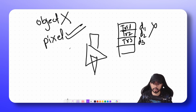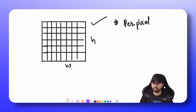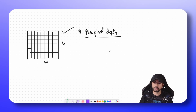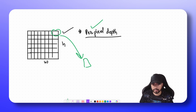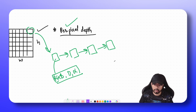So how do we create that per-pixel list? Imagine our final screen has width w and height h, made up of a grid of pixels. We want to store depth per pixel and sort each pixel based on depth. To store depth and color on a per-pixel basis, we design a data structure that is a grid of linked lists. Each pixel is a linked list, and each element of the linked list has an RGB value, a depth value, and an alpha value.